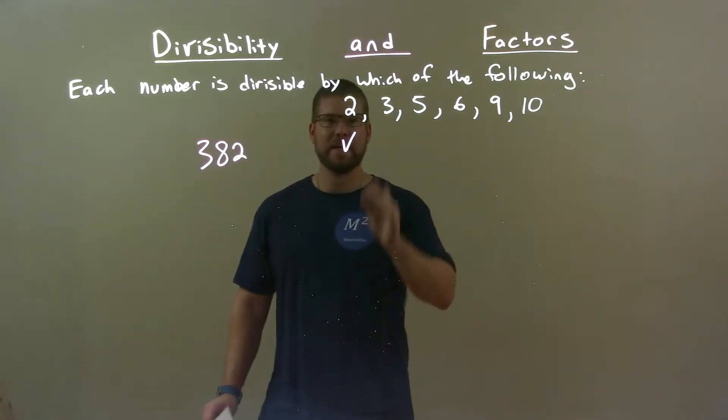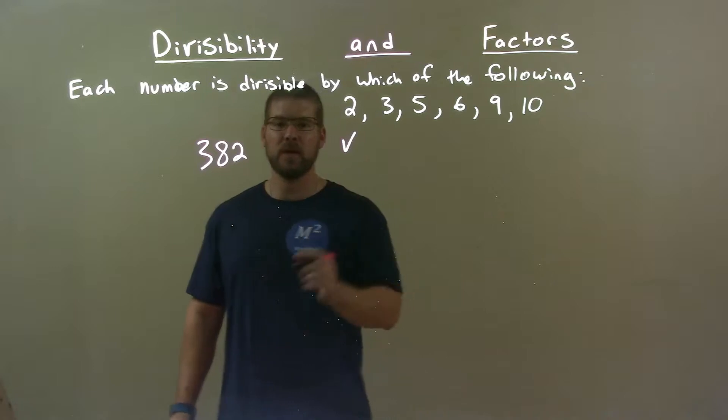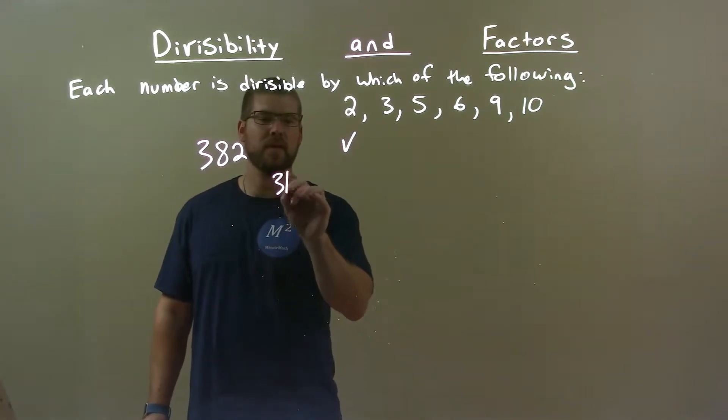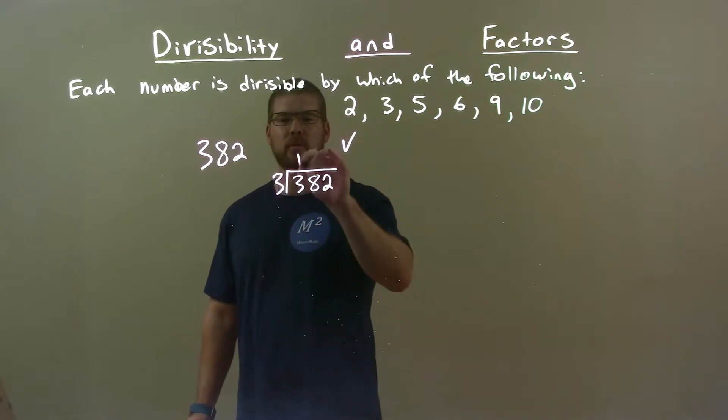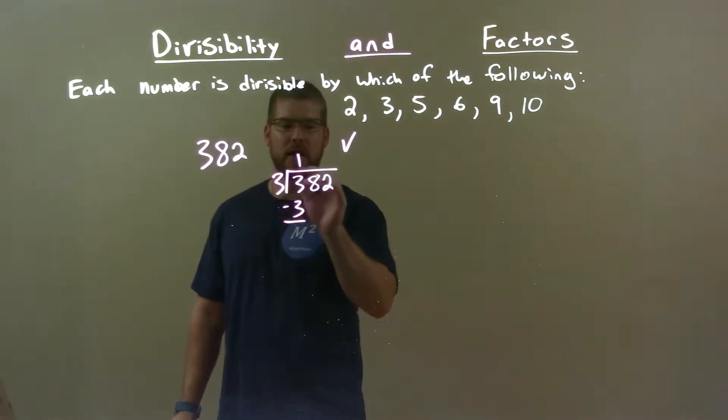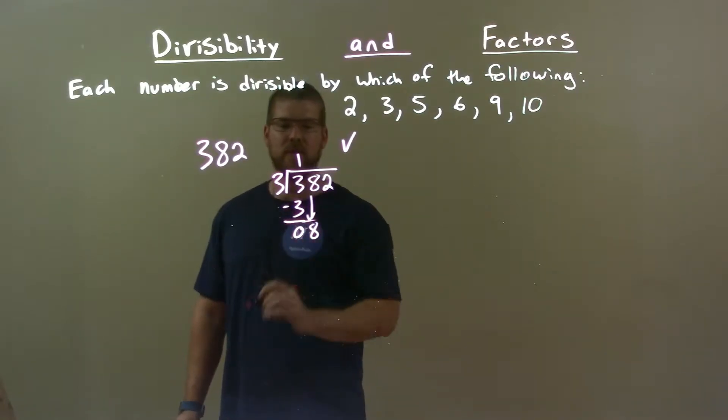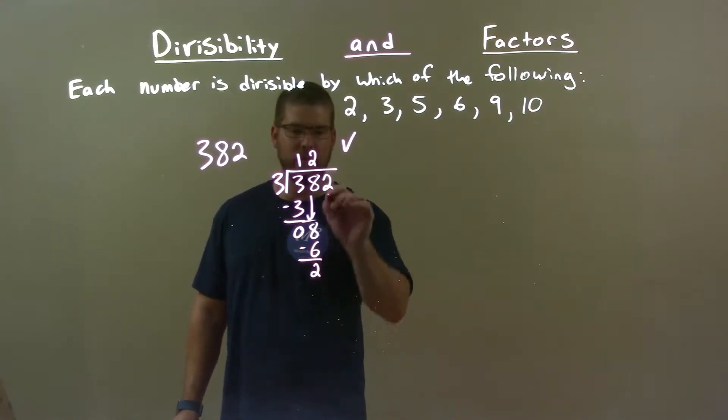Next step, 3. Is it divisible by 3? Let's check with long division. 3 into 382. 3 goes into 3 one time. 1 times 3 is 3. Subtract it, got a 0. Bring down the 8. 3 goes into 8, that's going to be 2 times. 2 times 3 is 6. Subtract and we get a 2. Bring down this 2.